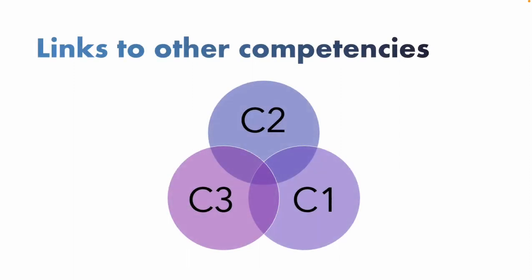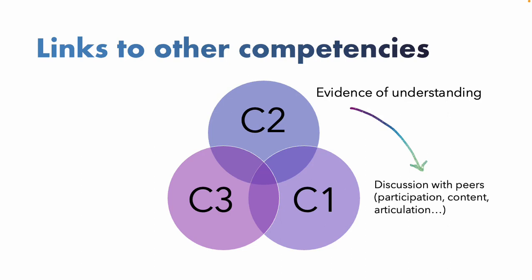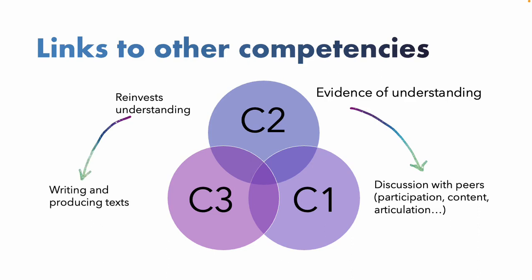Finally, competency two is a complex competency mostly because it relies so heavily on competency one and competency three. We cannot know what's going on inside a student's brain — whether they've understood what they're reading, watching, and listening to — unless they are discussing it with their peers through competency one, through oral production of language. And we can't get them to reinvest understanding unless they're really engaging competency three: writing and producing texts that use ideas they've read and talked about. The next video will dig into how to evaluate competency three.